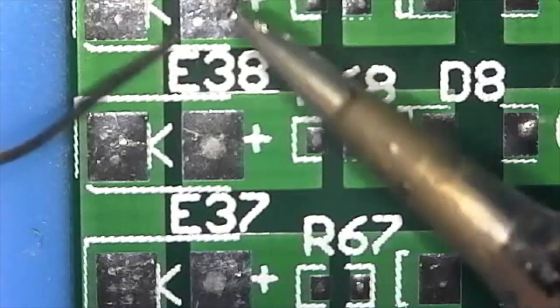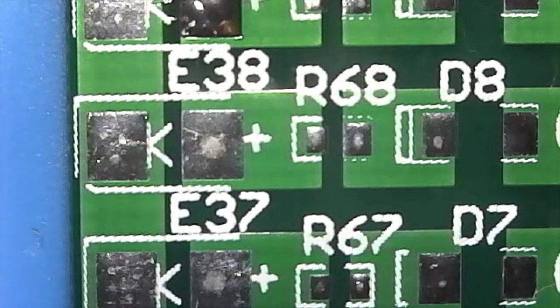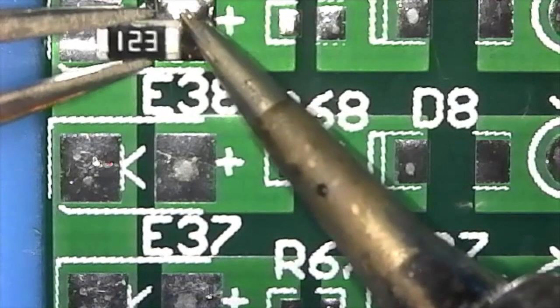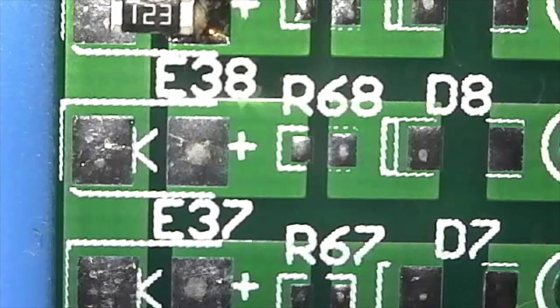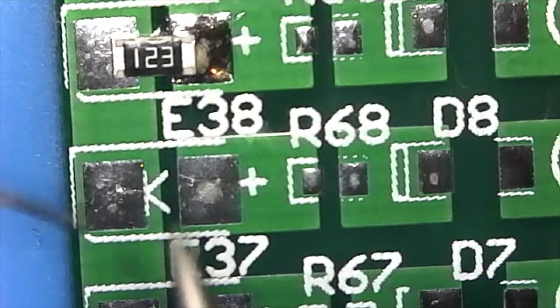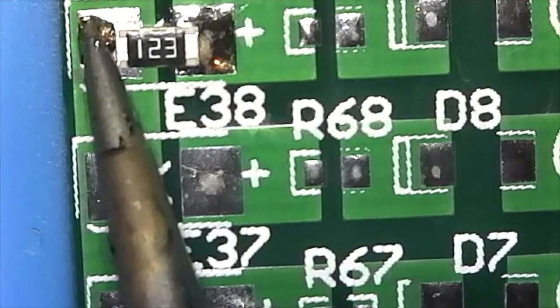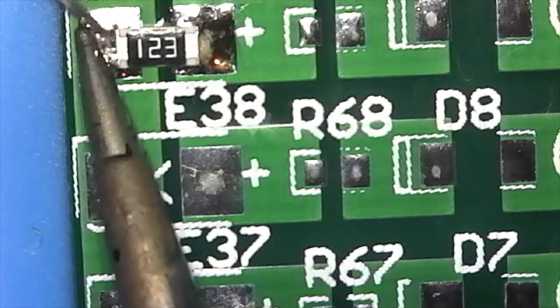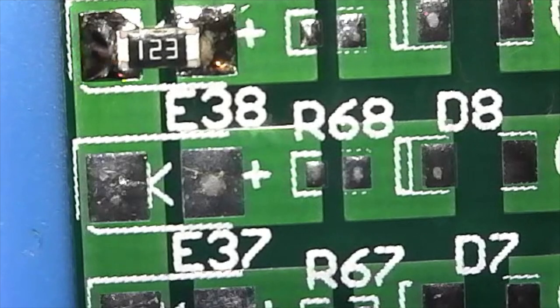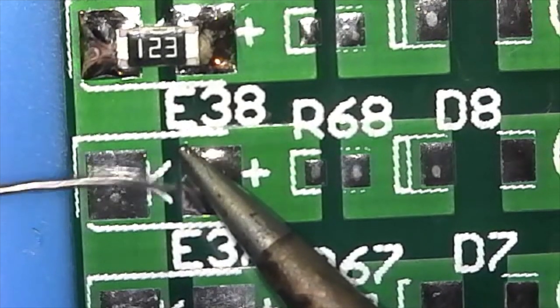Since we are not using solder paste and a heat gun or doing that type of reflow, we actually have to do what's called pre-tinning the pad. Pre-tinning the pad so we could grab the part with the tweezers, reflow the solder with the iron. This way we could center the part and make sure it's flat against the board.